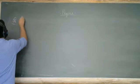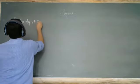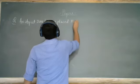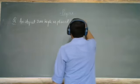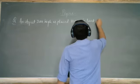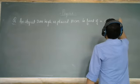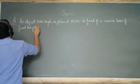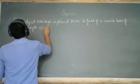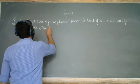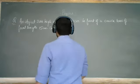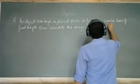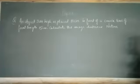Now let us do one more question. An object 2 cm high is placed 10 cm in front of a convex lens of focal length 15 cm. We need to calculate the image distance and also mention the nature of the image.